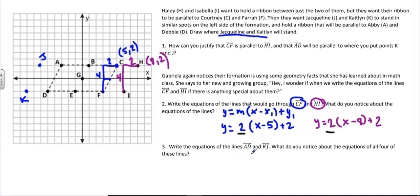Number 3 asks to write equations for line AD and line KJ. What do you notice about the equations of all four of these lines? AD. So AD, I'll start with y equals, and then I need the slope. So I can go up 2 over 1. So the slope is 2. And then x minus, I need a point, negative 3, 2. And then I'm going to do, so that's AD.